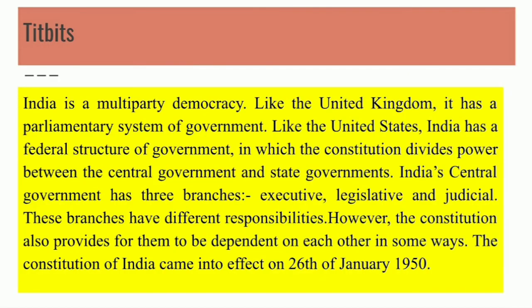This is the tidbits. India is a multi-party democracy. Like the United Kingdom, it has a parliamentary system of government. Like the United States, India has a federal structure of government. So we follow the parliamentary system of government like the United Kingdom, and a federal structure of government like the United States. The constitution divides power between the central government and the state governments. India's central government has three branches: executive, legislative, and judicial. All three branches have different responsibilities — for example, the judicial branch is there for providing justice. However, the constitution also provides for them to be dependent on each other in some way, and it started on 26th January in the year 1950.